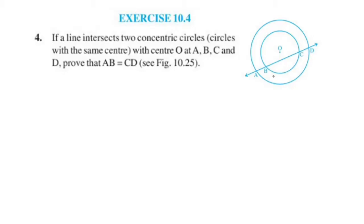Hello everyone, welcome to this video. This is question number 4. If a line intersects two concentric circles with center O at points A, B, C, and D, prove that AB is equal to CD.